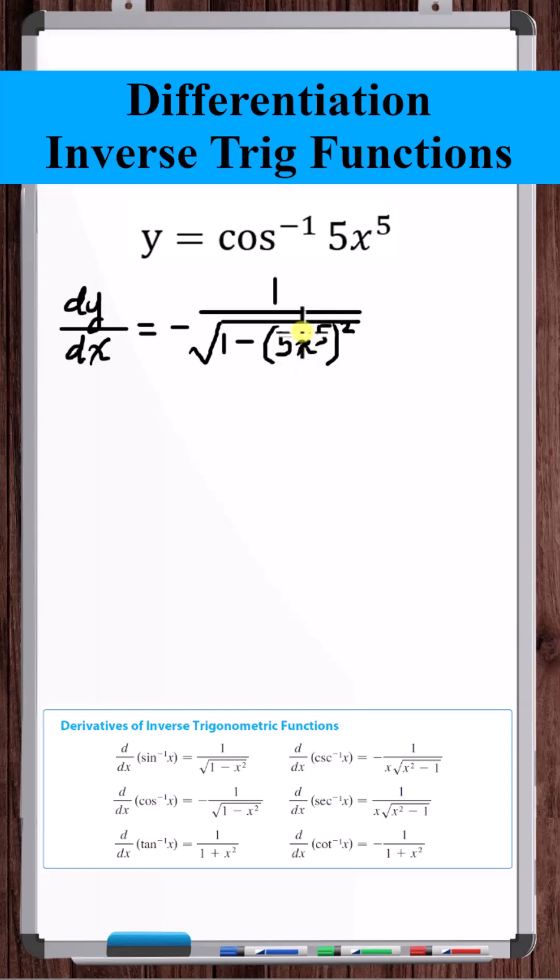Times the derivative of that something. Derivative of 5x to the fifth is 25x to the fourth.